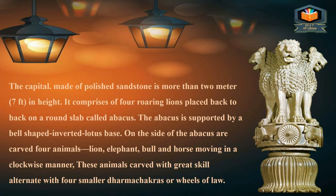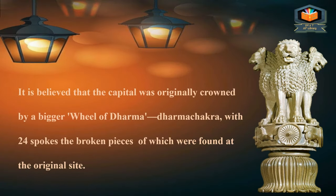On the sides of the abacus are carved four animals — lion, elephant, bull, and horse — moving in a clockwise manner. These animals are carved with great skill and alternate with four smaller Dharma Chakras, or wheels of law. It is believed that the capital was originally crowned by a bigger wheel of Dharma with 24 spokes, the broken pieces of which were found at the original site.